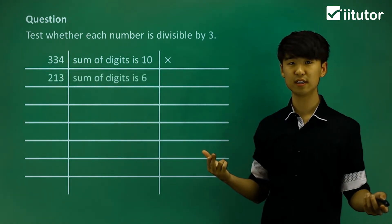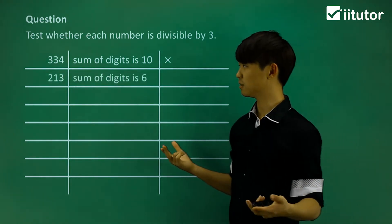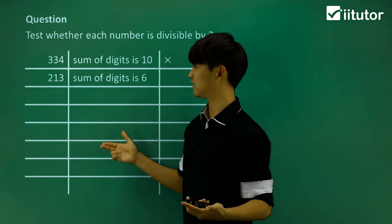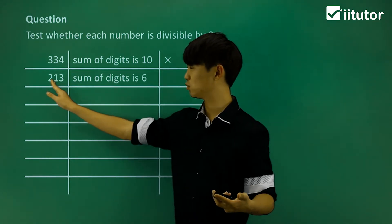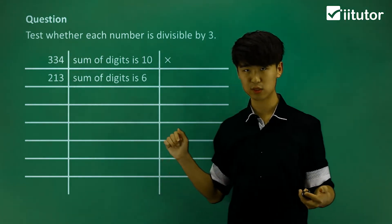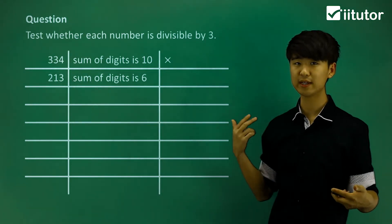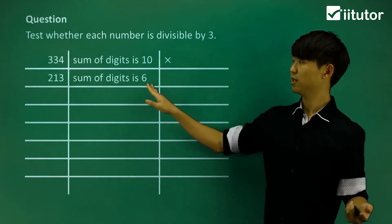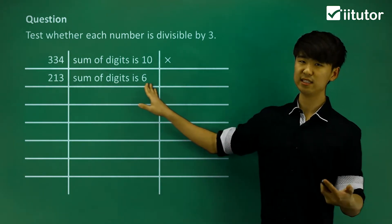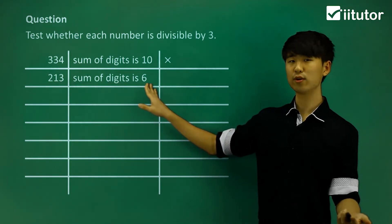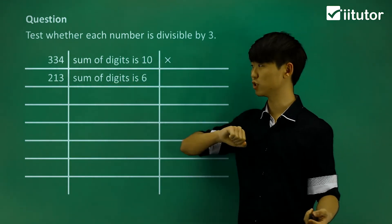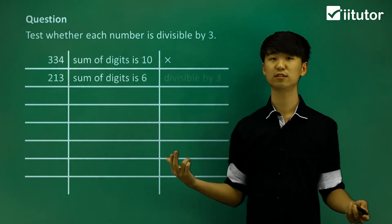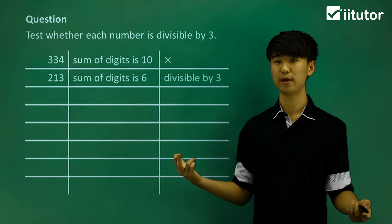213: in this case our sum of digits is 6. So 2 plus 1 plus 3 gives us a sum of digits equal to 6. And again, 6 is divisible by 3. So 213 is, of course, divisible by 3.